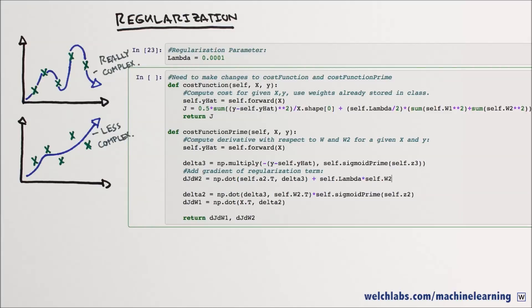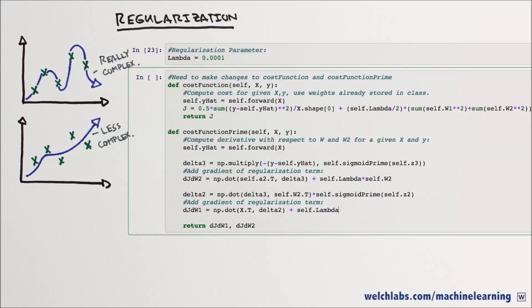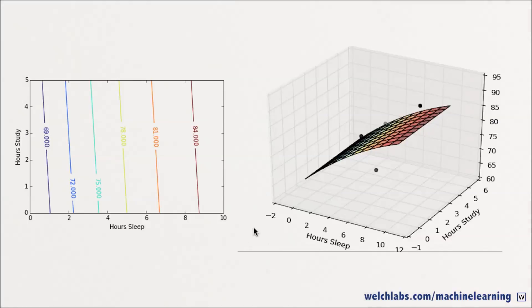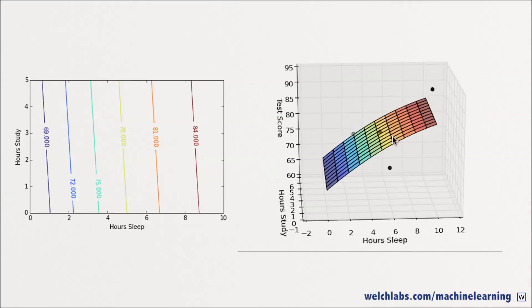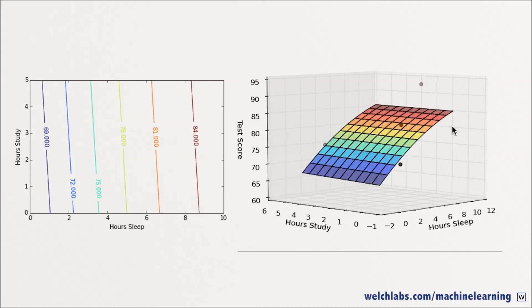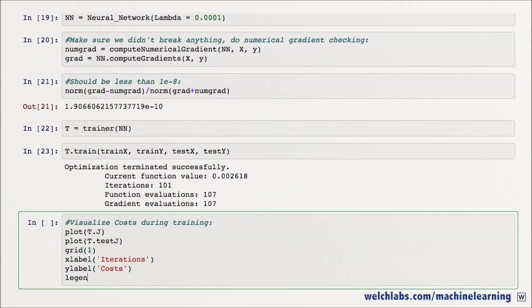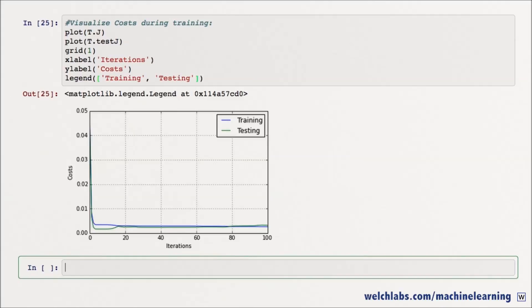We'll introduce a regularization hyperparameter, lambda, that allows us to tune the relative cost. Higher values of lambda will impose bigger penalties for high model complexity. If we train our model now, we see the fit is still good, but our model is no longer interested in exactly fitting our data. Further, our training and testing errors are much closer, and we've successfully reduced overfitting on this dataset. To further reduce overfitting, we could increase lambda.